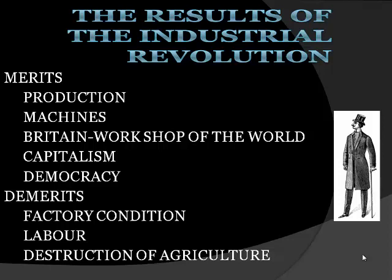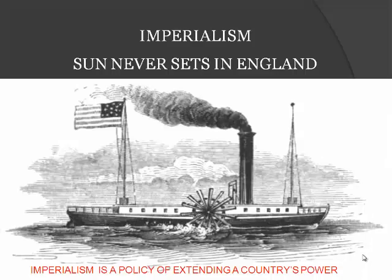Capitalism led to imperialism. Capitalist countries wanted raw materials for manufacture and markets to sell manufactured goods. They wanted to take possession of weak countries, which led to international rivalries. After the Industrial Revolution, England started its imperialism — imperialism means a policy of extending a country's power. That is why we say the sun never sets on England, because it had colonized much of the world, for example India and Australia, which became colonies of England.